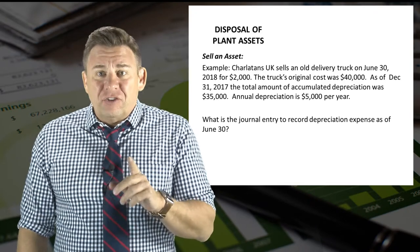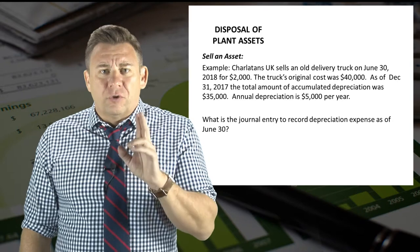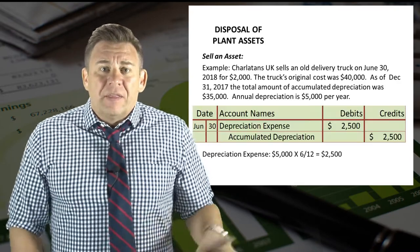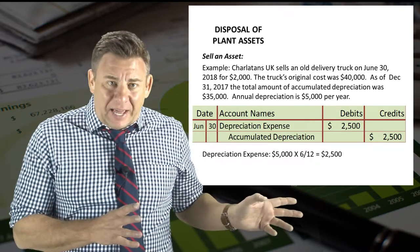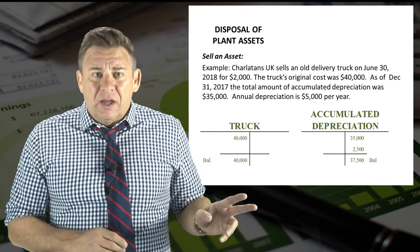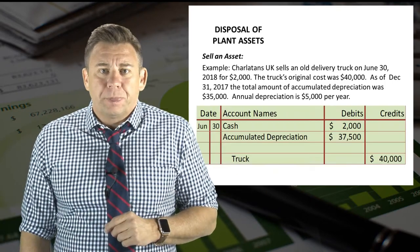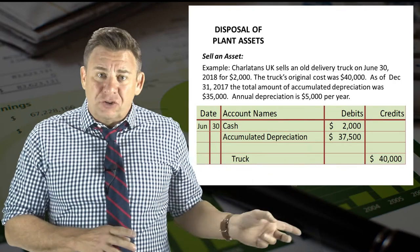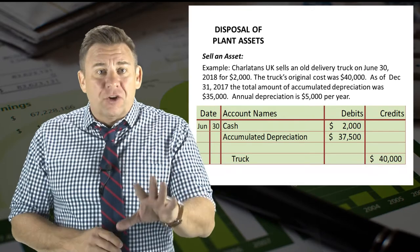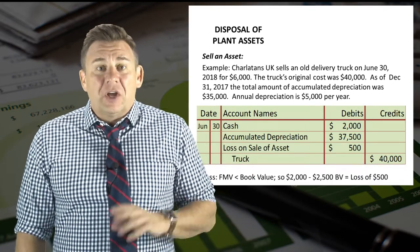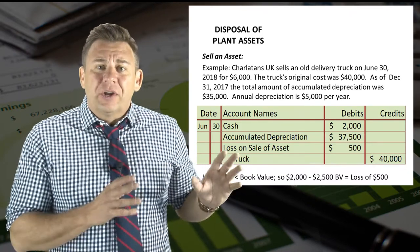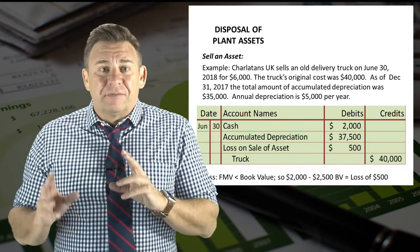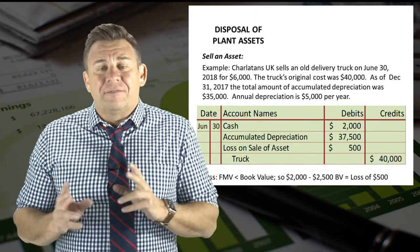Finally, what if the old truck was sold for $2,000 rather than $6,000? The adjusting entry to get depreciation up to date is exactly the same, so the ending balances in the truck account and accumulated depreciation account are also the same. Starting with what we know — entering cash, accumulated depreciation, and truck — notice that we are now missing a debit, not a credit. Losses have normal debit balances, so we need to record a loss of $500 on the sale. The loss is $500 because the book value of $2,500 is greater than the fair market value of $2,000.